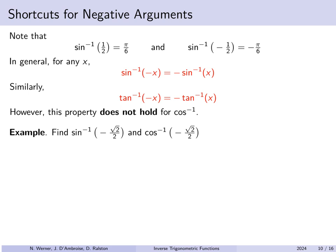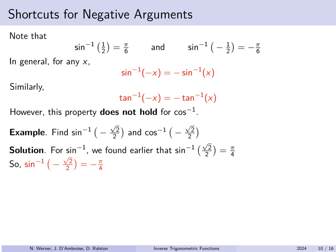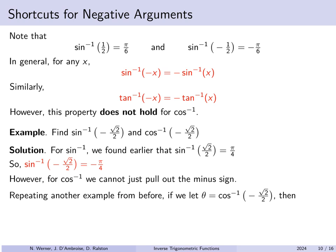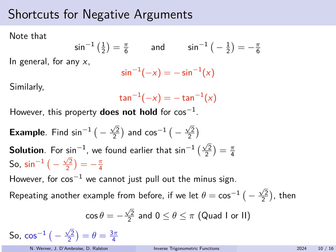But this does not hold for arccosine. We have already found that the arcsine of root 2 over 2 is pi over 4, so the arcsine of minus root 2 over 2 is minus pi over 4. But for arccosine of minus root 2 over 2, you can't just pull out the minus sign — negative pi over 4 is not in the range of the arccosine function. Arccosine has a range of 0 to pi. So we look for an angle whose cosine is minus root 2 over 2 between 0 and pi, which is 3 pi over 4.